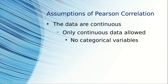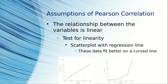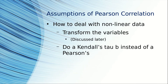Pearson's correlations can only deal with continuous variables, not categorical variables. A Pearson's correlation also assumes that the relationship between the variables is linear. To test for this, you can do a scatter plot with the variables and look at the regression line. You can see that these data don't fit a straight line very well at all — they fit a curved line.